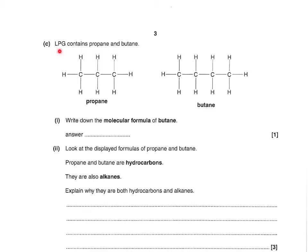LPG contains propane and butane. Write the molecular formula of butane. Molecular formula says how many carbons and how many hydrogens there are. Butane has four carbons — so that's C4 — and ten hydrogens — so H10. The molecular formula is C4H10. Make sure those numbers are written small and lower than the capital letters. You can write them in either order, so H10C4 is also acceptable.